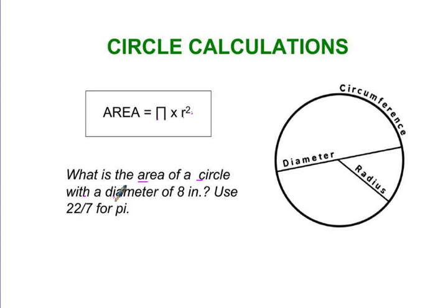What is the area of a circle with a diameter of 8 inches? Well, if the diameter is 8 inches, that means the radius, or half of that, is going to be 4. See, 8 all the way across, 4 right there.